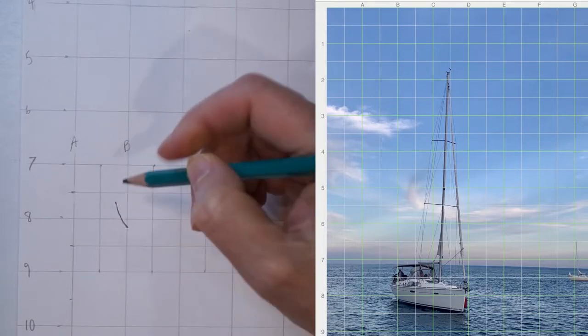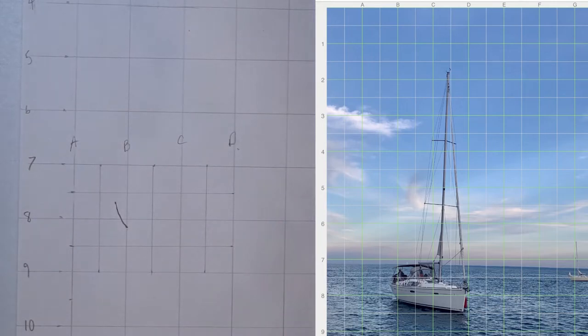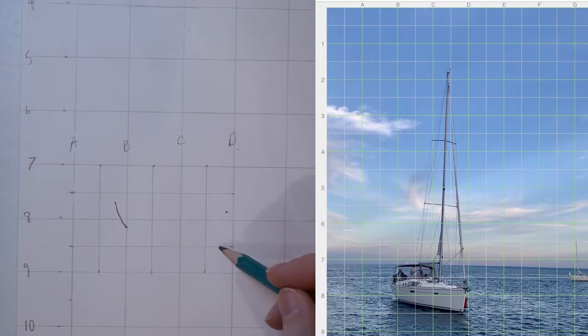And now looking at the front of the boat here, this point here is above 8 and almost at D, so right about here. And the bottom point is at 8 and a half, just below 8 and a half, and further in than this point, so right about there. So I'll draw that line, that line is pretty straight.